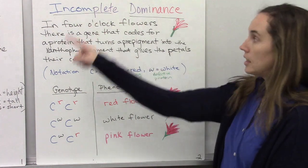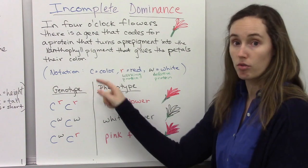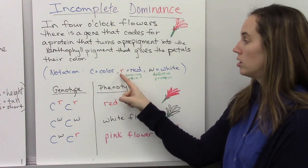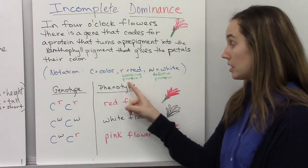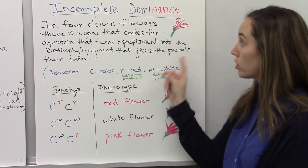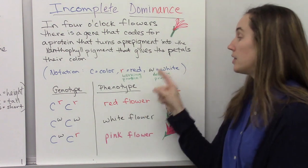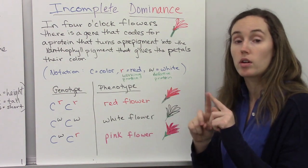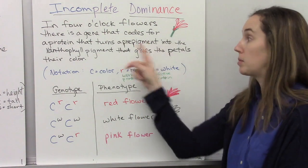So in this case, this gene we're going to designate as C for color. And then the two alleles are: we'll have R, that stands for red, and in this case the protein is working. It's going to be a protein that turns that pre-pigment into xanthophyll. And then there's the W allele, which is the allele for a defective form of the protein that doesn't turn the pre-pigment into xanthophyll.